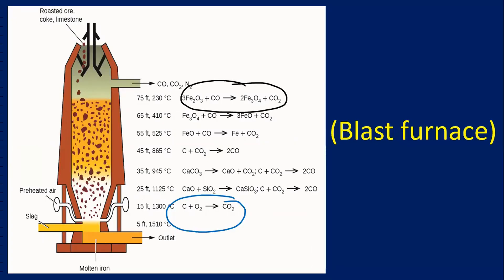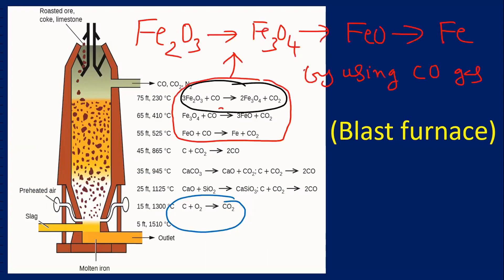If carbon monoxide is formed, then it changes Fe2O3 to Fe3O4. See the first reaction at 230 degrees centigrade. So Fe3O4 is formed. Fe2O3 changes into Fe3O4, that can be changed into FeO, FeO to iron. What is the reducing agent in the first three reactions on the top? Carbon monoxide in the blast furnace.